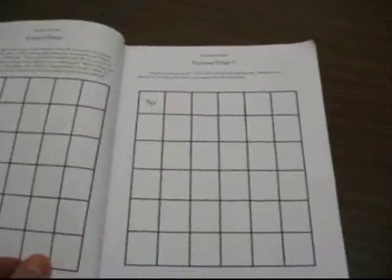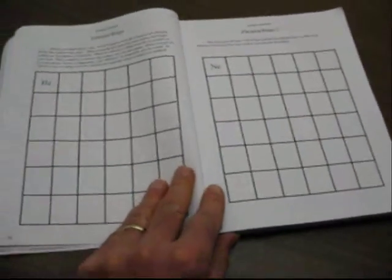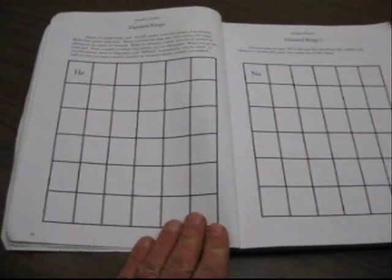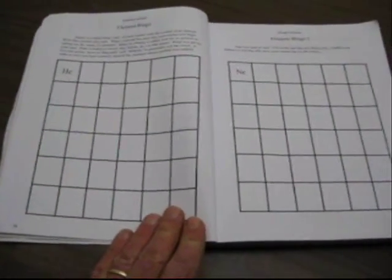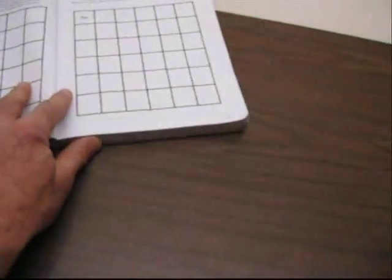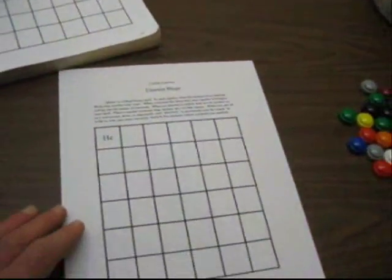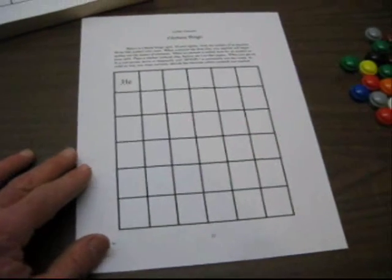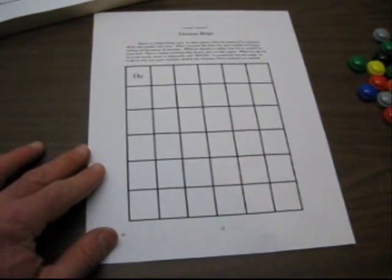On page six in the student textbook and then on page seven are two blank bingo cards. In the game of Element Bingo, your students will create their own bingo cards. We've made a copy of one of the bingo cards here to show you how your students can set up their cards.